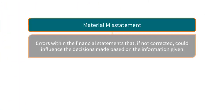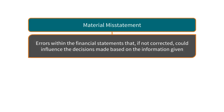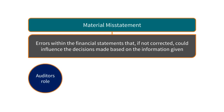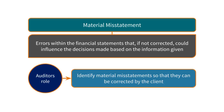Material misstatements are errors within the financial statements that, if not corrected, could influence the decisions made on the information given. It is the auditor's role to identify any material misstatements within the financial statements so that they can be corrected by the client before the accounts are published.